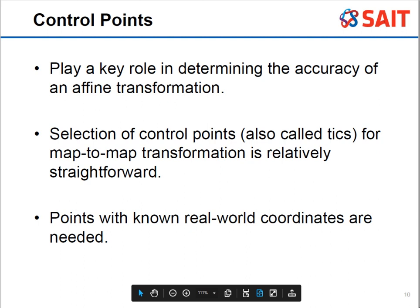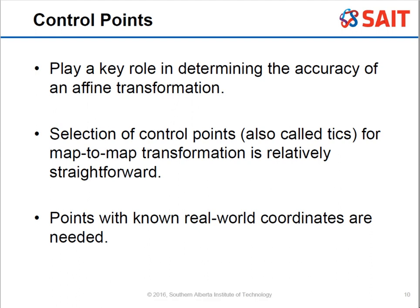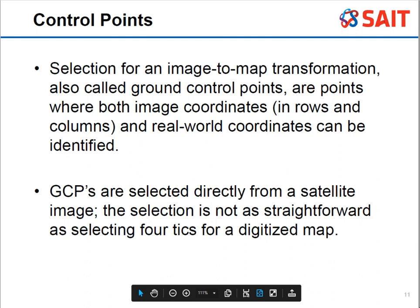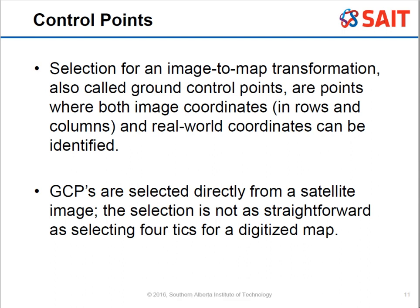Control points — also called ticks — are really important in determining accuracy for any transformation you choose. You need points with actual real-world coordinates, so whatever you're geo-referencing to must already have been geo-referenced. In image coordinates, the image only knows rows and columns, so we need to convert those image coordinates into real-world coordinates.